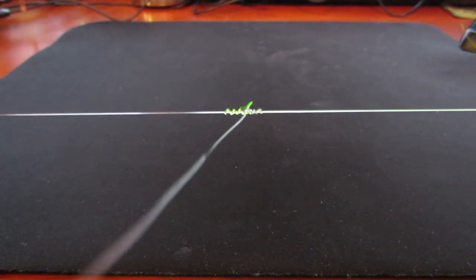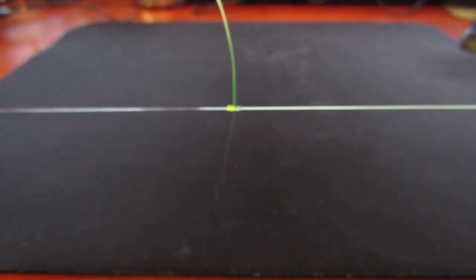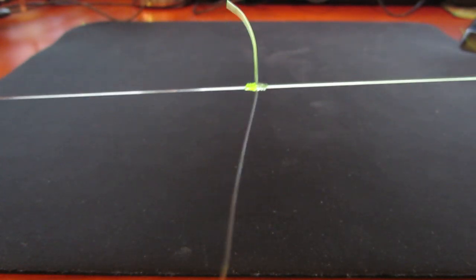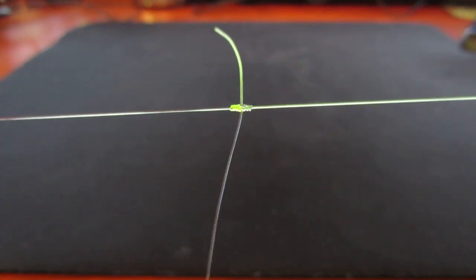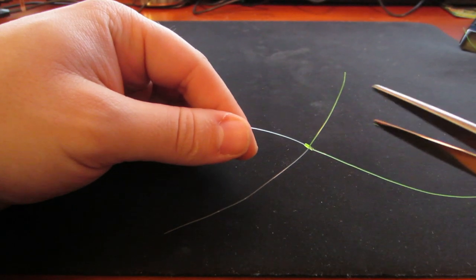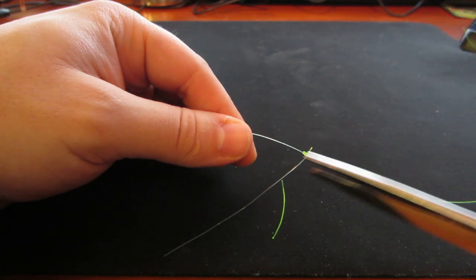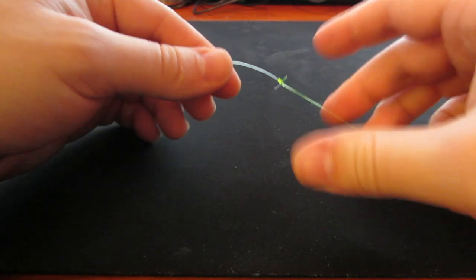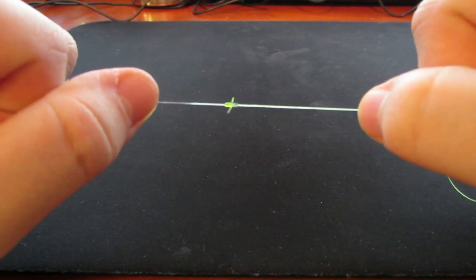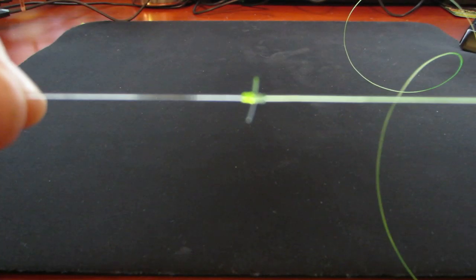All right. And then just start getting closer and closer. Just like so. Make sure it's nice and tight. And it'll look just like that. And what you do next is just cut those tag ends off. Like so. And then you got yourself a blood knot.